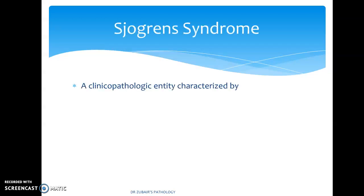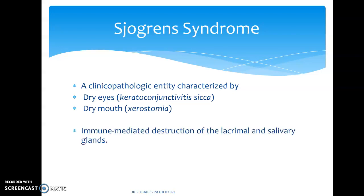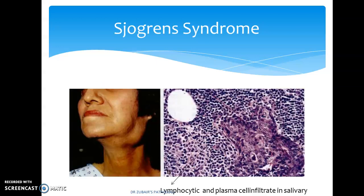Sjögren's syndrome is a clinicopathological entity characterized by dry eyes — keratoconjunctivitis sicca — and dry mouth — xerostomia. There is immune-mediated destruction of lacrimal and salivary glands. Autoantibodies to ribonucleoproteins are present, such as SSA and SSB.